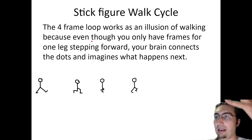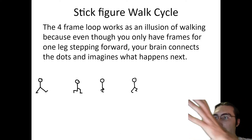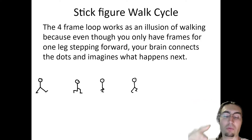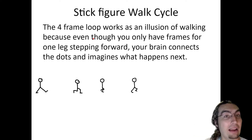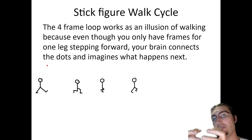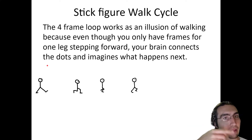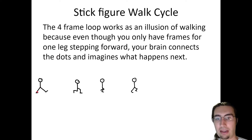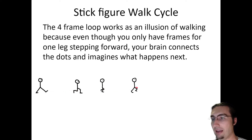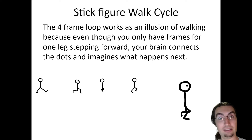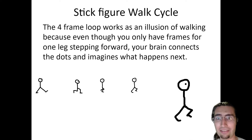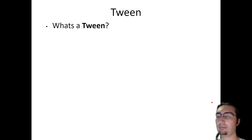The four-frame loop works because it's an illusion of walking. Even though you only have frames from one leg walking forward in front of the other, your brain connects the dots — as it does with any animation. Your brain sees these individual pictures flash in front of you and thinks that the character is walking. So on these four frames, the back leg is here, coming forward and stepping in front. It's just one leg being animated, but your brain loops it and thinks it's the next leg moving forward. It looks like he's actually walking, with just those four frames.